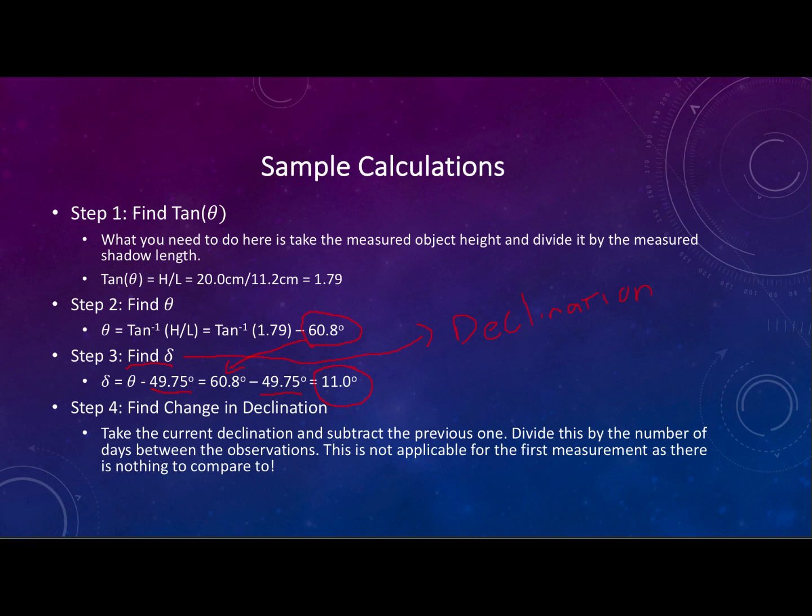Now the last step will be to find the change in declination. You take the current declination and subtract the previous one and then divide it by the number of days between the observations. However for this calculation it's not applicable because we have nothing to compare it to. So let's look at one more example so we can actually go through a sample calculation of the change in declination for you as well.